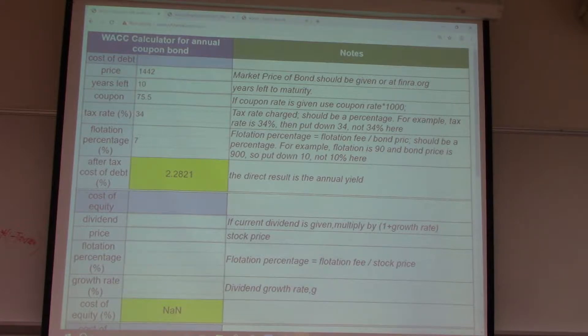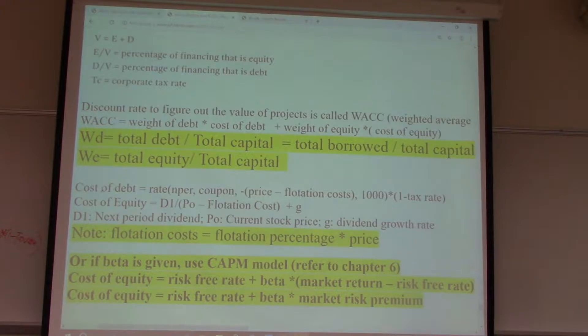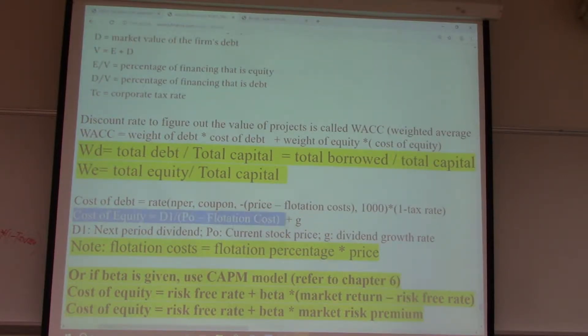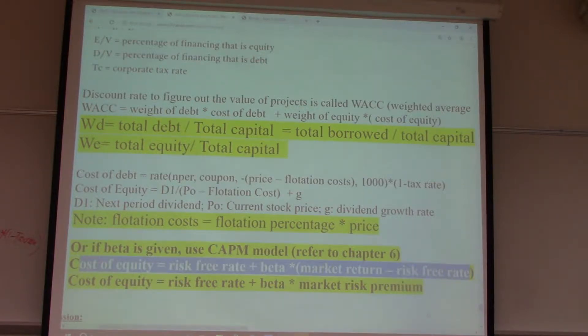So, for cost of equity, we can do both ways. If we know, cost of equity is just the cost to the firm. But to the stockholders, it's returns they earned. So, we have 2 ways to get a return investors can earn. One is using CAPM model. We learned in chapter 6. Another one is dividend growth model from chapter 8. If it's a CAPM model, there's no place to plug in the flotation cost.